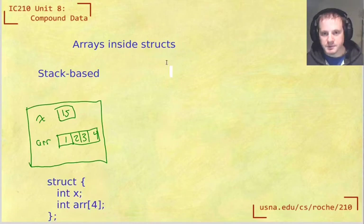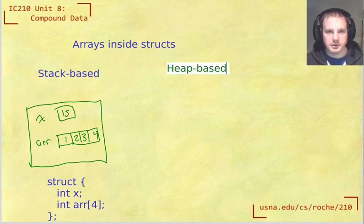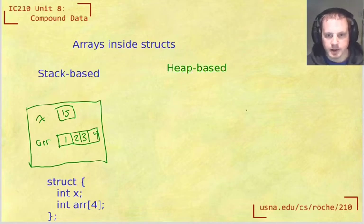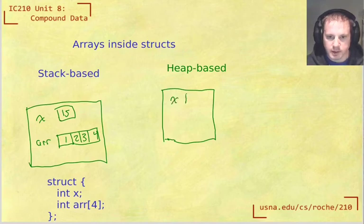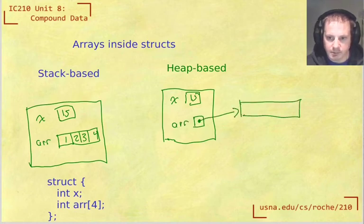Then a lot of times because of those limitations with stack-based arrays, we might think about heap-based arrays. So what's the picture going to look like? Well, now when we use a heap-based array, that means that our actual struct doesn't contain all of the data for the array, it just contains a pointer. So we would have something here like x, and then the array itself would just be a pointer which we have to separately allocate, so that would then point to some array out in the heap.